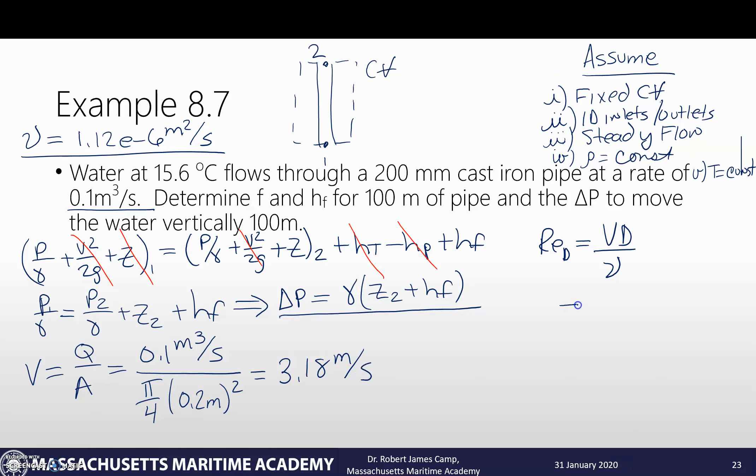I can go and I can plug that into my Reynolds number over here. 3.18 meters per second times 0.2 meters divided by 1.12 times 10 to the negative 6 meters squared per second. All the units cancel out. Unitless parameter, which is what I'm looking for. Calculate out Reynolds number based on diameter is 5.7 e to the 5. I look at that. That is a very turbulent flow.